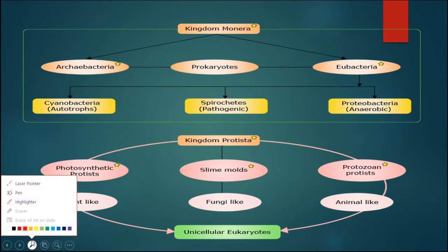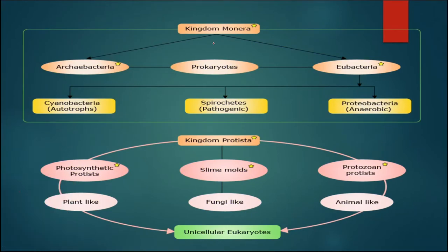In this slide we can see how kingdom Monera is classified. It is mainly classified into two: Archaebacteria and Eubacteria. All of these are prokaryotic in nature — having a primitive type of cellular structure with no nucleus and membranous cell organelles totally absent. Archaebacteria can live in various harsh conditions like salty areas, marshy areas, hot springs, and the gut of cattle.